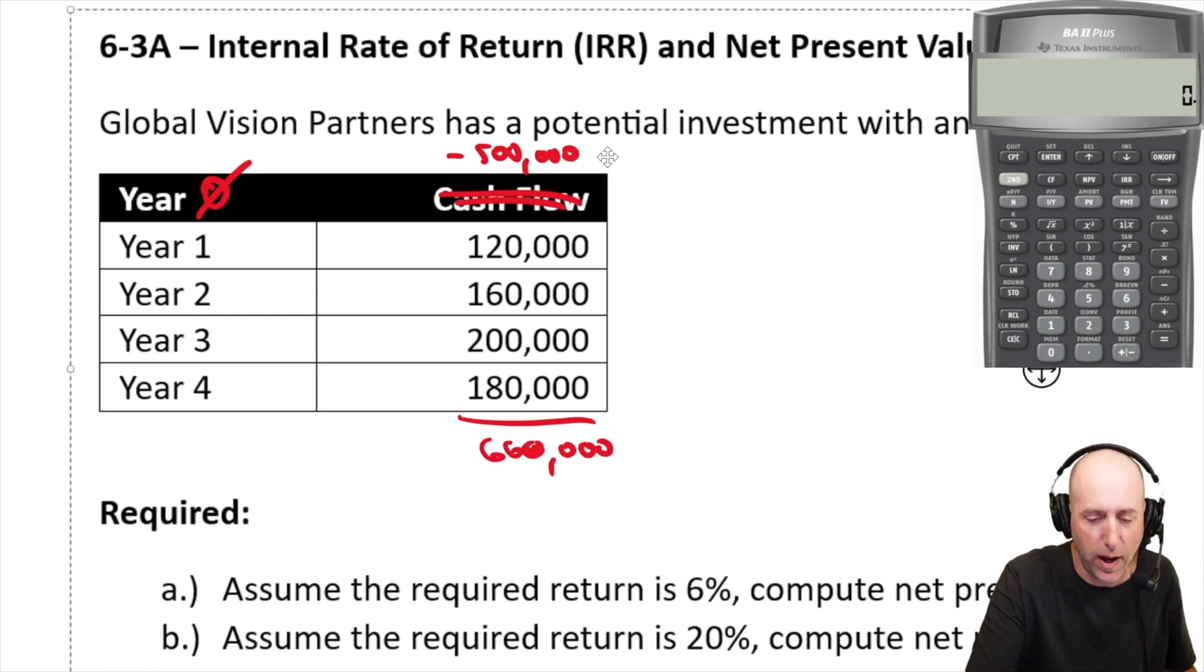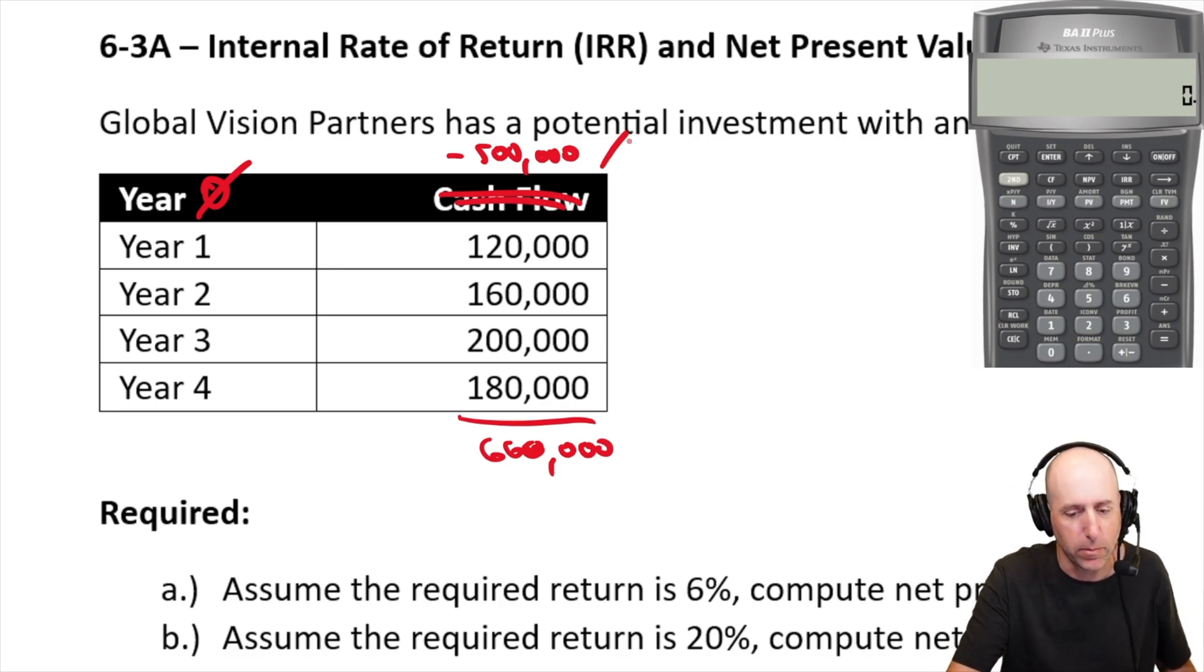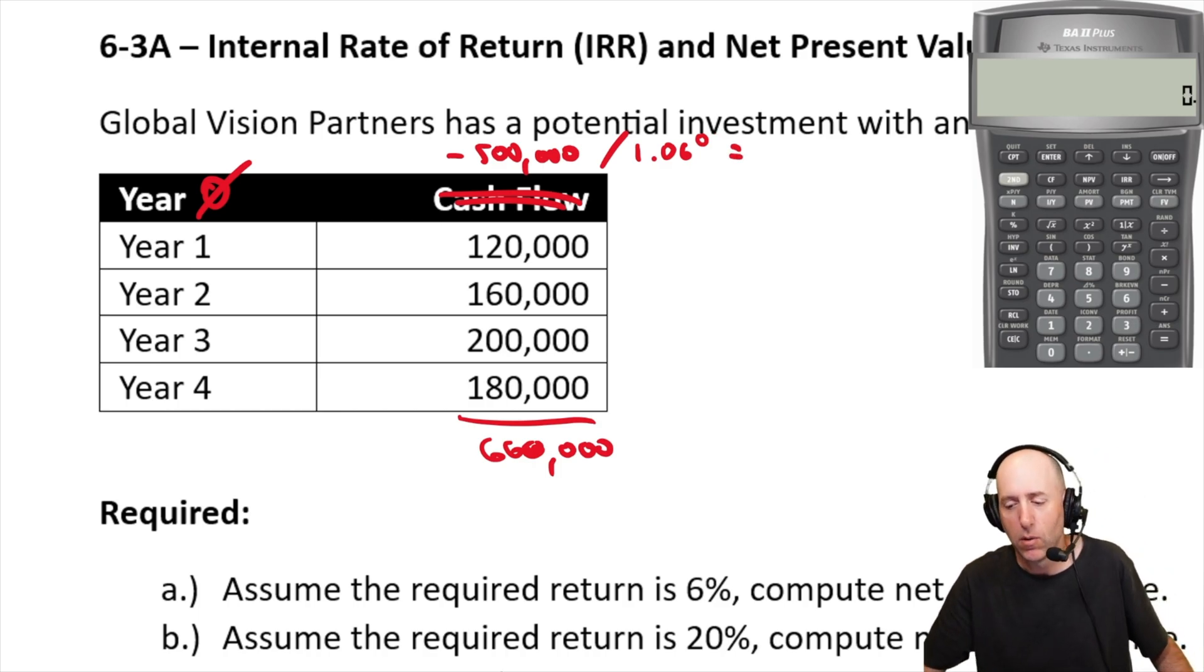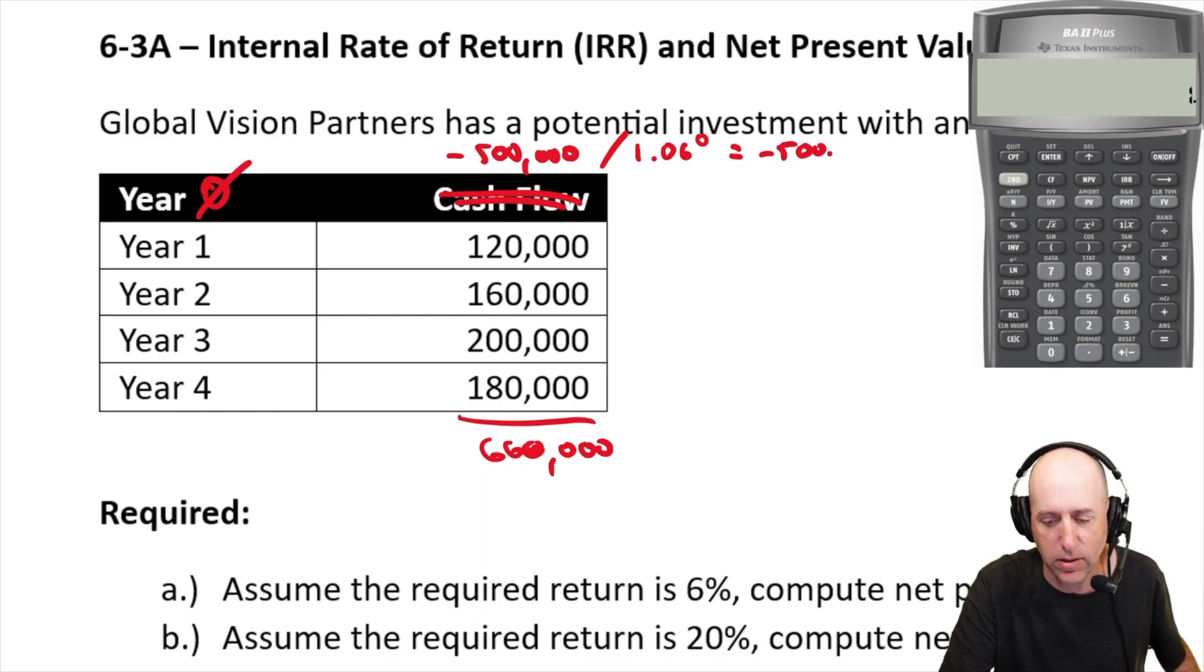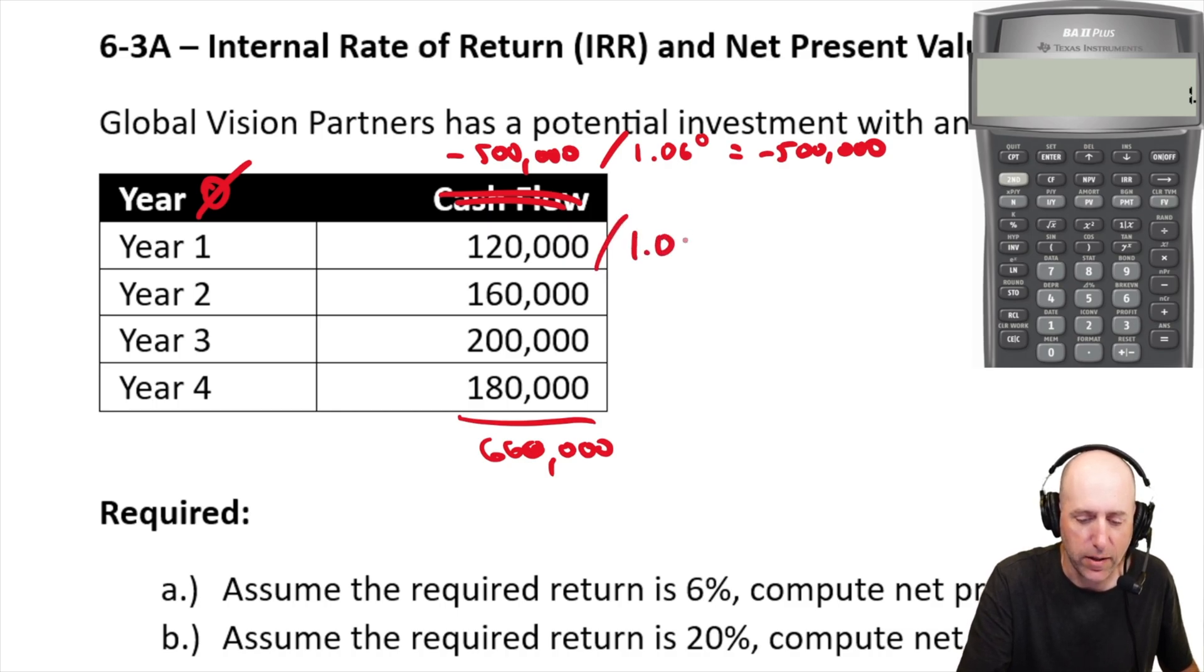Well, very straightforward. You just divide by, now I'll do this in the financial calculator, go quicker, but divide by 1 plus the discount rate. So in this case, 1.06 raised to the power of the number of periods we're discounting. And for our initial thing, it's 0. Now, you don't need to do this, but 1.06 to the 0 is 1. So 500,000 divided by 1 is 500,000 or negative 500,000 divided by 1 is negative 500,000. Now, you just do the same thing for all these cash flows, divided by 1.06 to the 1, divided by 1.06 to the 2.